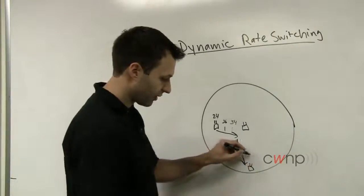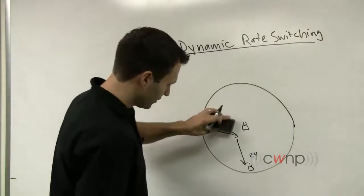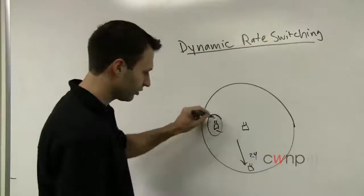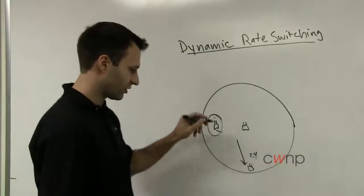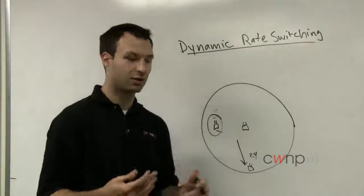The connectivity rate or the data rate—even though this spot up here is closer to the access point than it is down here—you might only get 12 megabits per second here based on the environmental conditions.